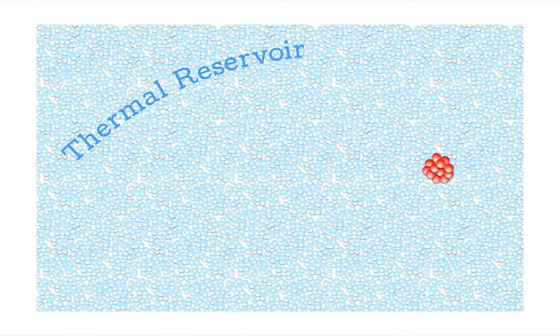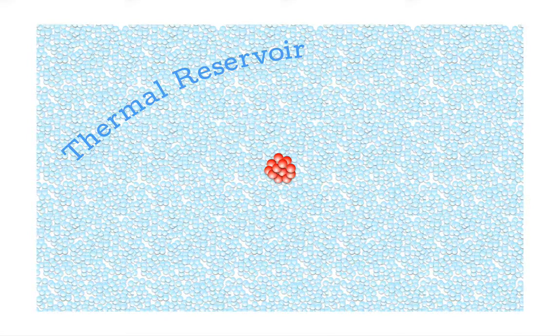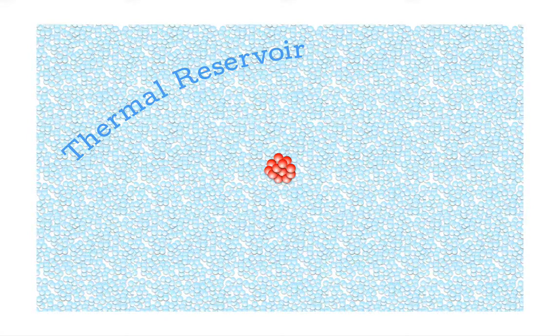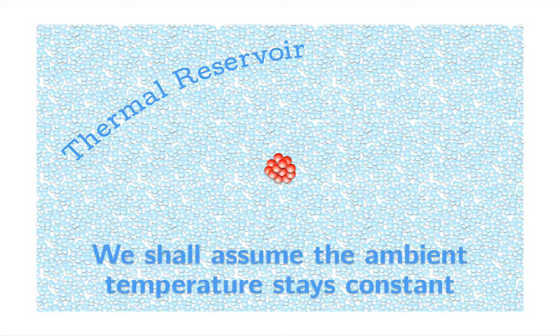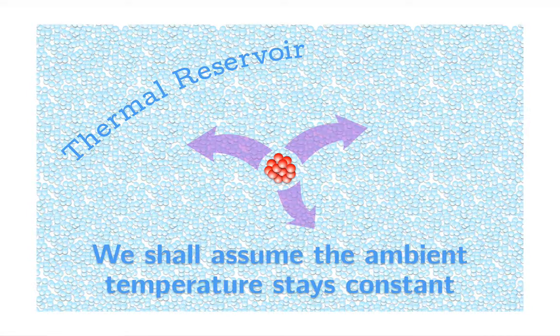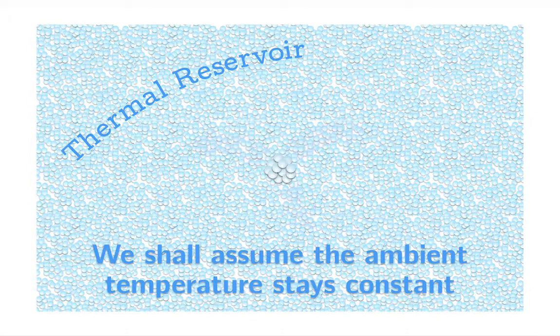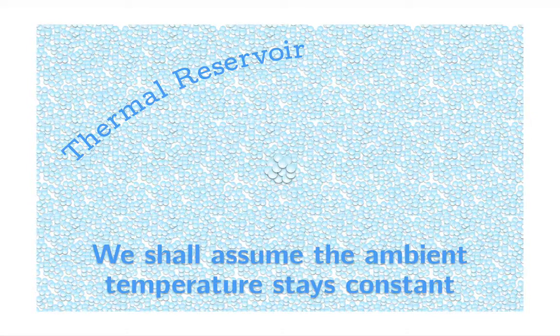We're going to consider a situation where we have a so-called thermal reservoir. For instance, if we brought a hot object into this context, we're going to imagine that there's so many cool particles that there's really no hope of raising their temperature. We will only be seeing average kinetic energy flowing out into the reservoir so that the object cools down.